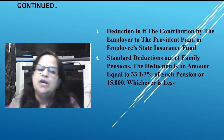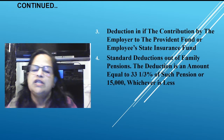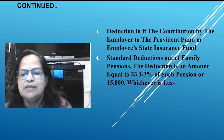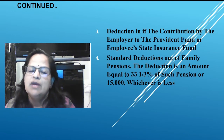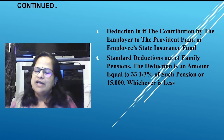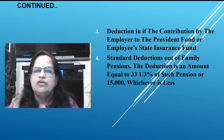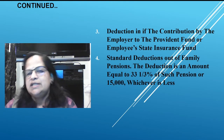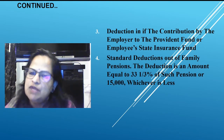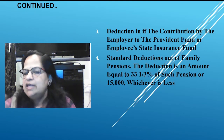Standard deduction for family pension: this is very important. The deduction is 33 and 1/3 percent of the pension or 15,000 rupees, whichever is less. Family pension is paid to the family — spouse and children — of a deceased government employee. The wife is eligible until death; children are eligible up to age 18 for daughters and 21 for sons.